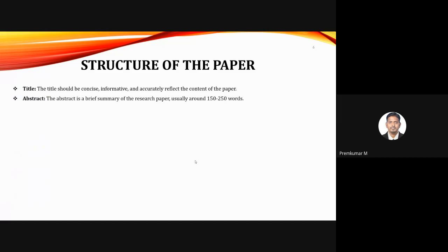The abstract is a brief summary of the complete paper with a word restriction of 150 to 250 words — not more than 250, not less than 150. My suggestion: in the first two or three lines, introduce your research. The next two or three lines, discuss your novelty. The next three or four lines, discuss the methodology. And the final two or three lines, discuss the findings. Organize the abstract this way to clearly describe the summary within the prescribed word limit.